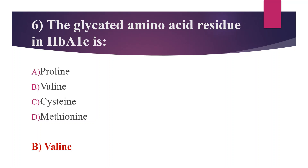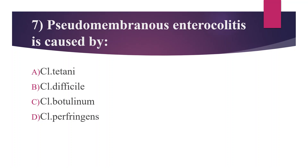Seventh question: Pseudomembranous enterocolitis is caused by — Option A: Clostridium tetani, Option B: Clostridium difficile, Option C: Clostridium botulinum, Option D: Clostridium perfringens. Answer is Option B, Clostridium difficile. Pseudomembranous enterocolitis, also called antibiotic-associated colitis, is the inflammation of the colon associated with an overgrowth of Clostridium difficile. This infection is a common cause of diarrhea after antibiotic use.